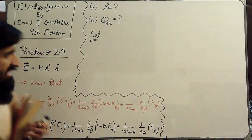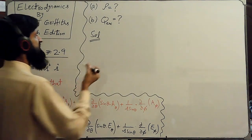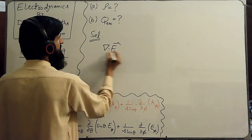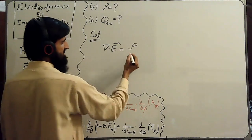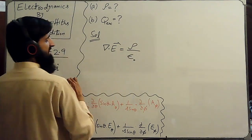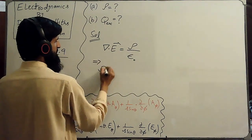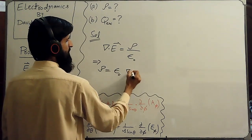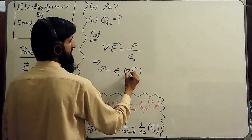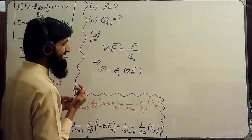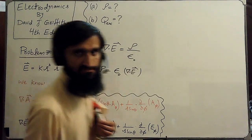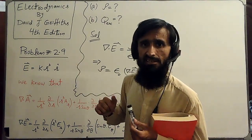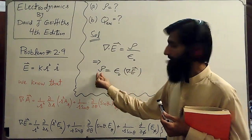For the first quantity we can easily use Gauss's law in differential form. The differential form of Gauss's law states that the divergence of the electric field vector equals the volume charge density divided by epsilon naught. To find rho, we can write rho equal to epsilon naught times del dot E. To find rho we will need the divergence of the electric field vector, whose value has been given, so we can find its divergence and put the value in to get our required quantity.